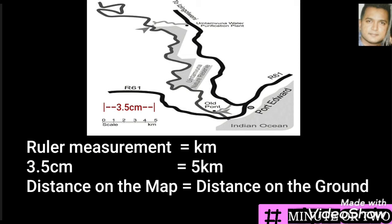But should you look at this question you will find that it is 3.5 centimeters. The 3.5 centimeters is your distance on the map and the 5 kilometers is your distance on the ground. So distance on the map equals distance on the ground.